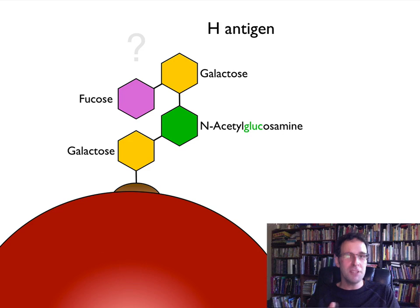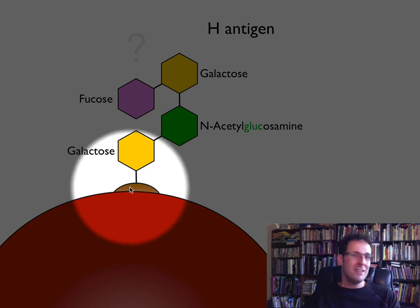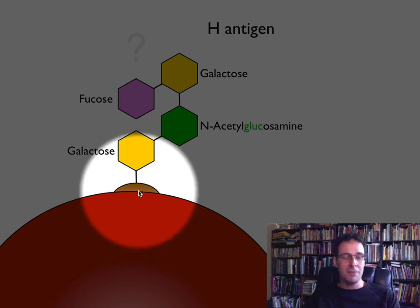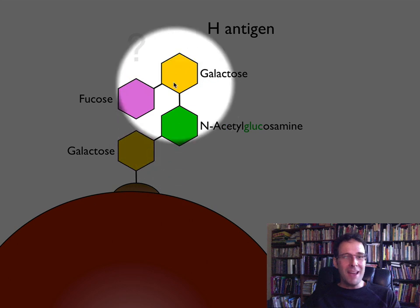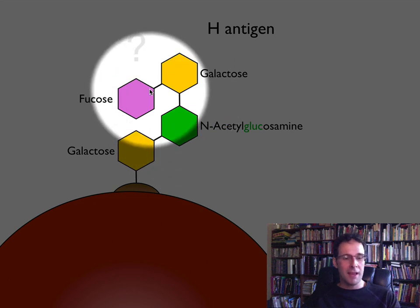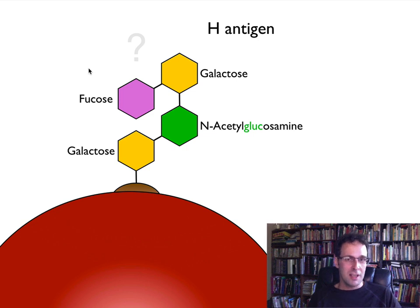Like most antigens, the H-antigen is a glycoprotein. What that means is that it's a protein suspended in the plasma membrane of a cell — in this case, the red blood cell. And then on the back of it, we have a carbohydrate chain. In this case, the carbohydrate chain has four subunits.